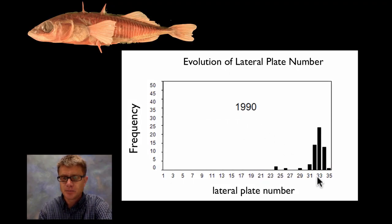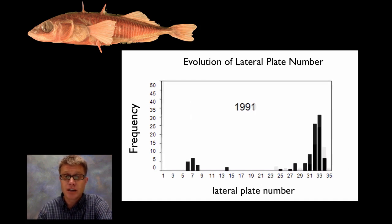And so in 1990 most of them are going to have around 33 plates on the side. And there's some that have a little bit less and some that have a little bit more. So we have variation. We have this bell shaped curve. And then they simply go back year after year after year. So let's look what happens in 1991.